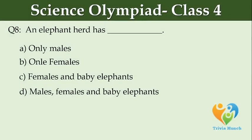An elephant herd has dash. Option A: Only males, Option B: Only females, Option C: Females and baby elephants, Option D: Males, females and baby elephants.